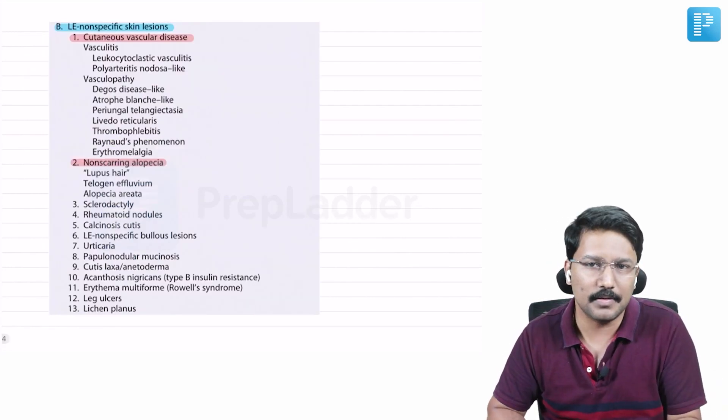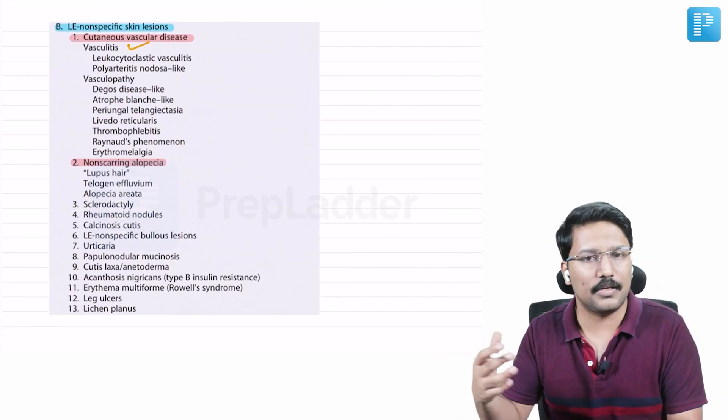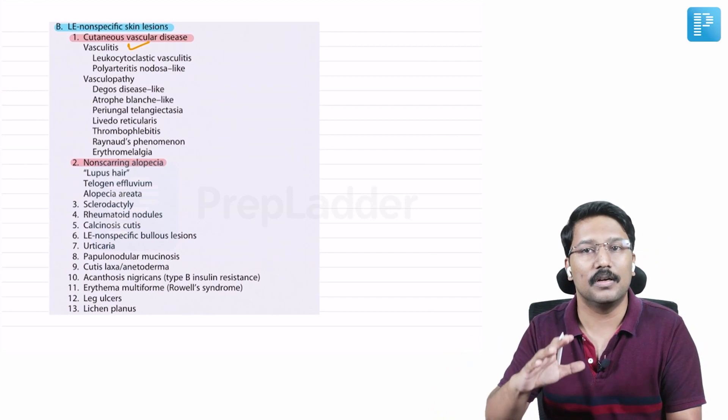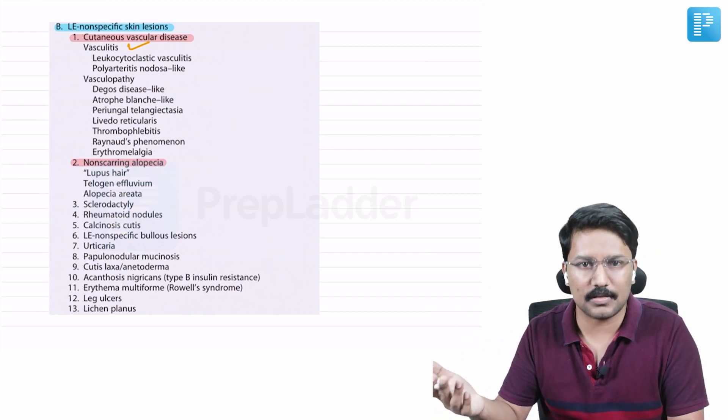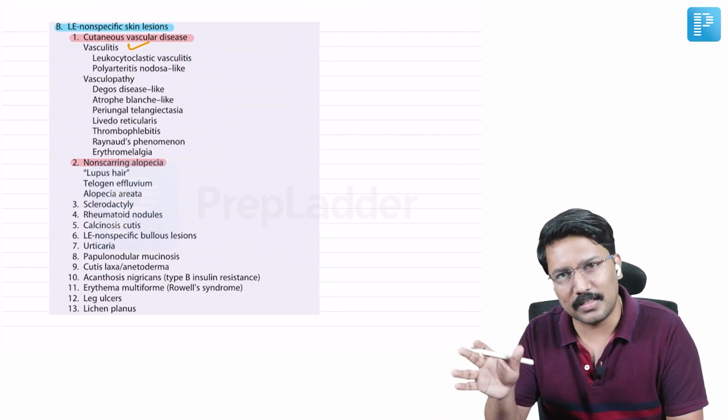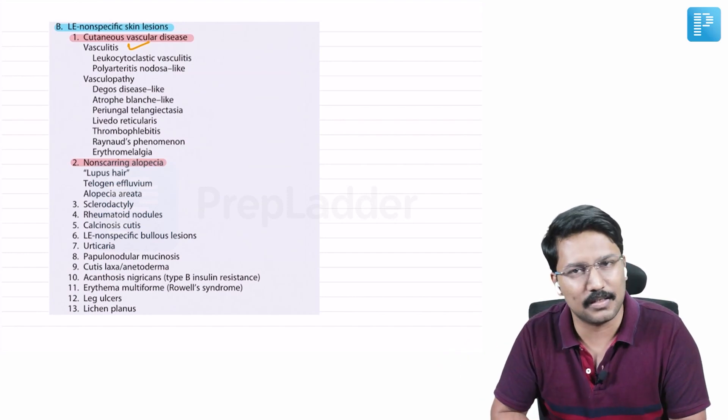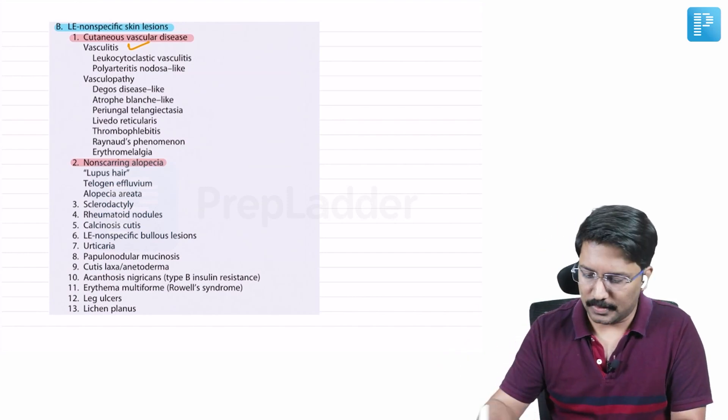Now what are the non-specific lesions we see? A long list. So that includes vasculitic lesions like leukocytoclastic vasculitis or polyarteritis nodosa-like vasculitic manifestations. Then certain vasculopathies. I think the whole list is not particularly important - just be aware that there are a lot of non-specific skin lesions.